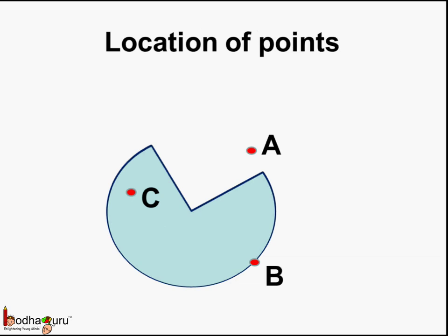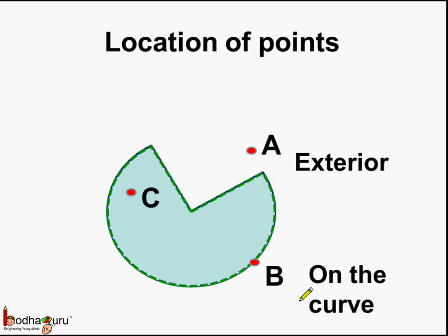Now, let us see the location of points with reference to a closed figure. This is point A, and since it is lying outside, we can say point A is an exterior point. This is the boundary of the figure, and point B lies on the boundary of the figure. Hence, it can be said point B lies on the curve or on the figure. Now, the last point — point C. It lies inside the curve, or you can say it lies inside the closed figure. So, we can say point C is interior to the closed figure.